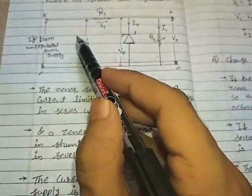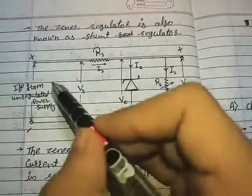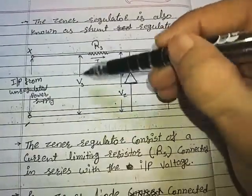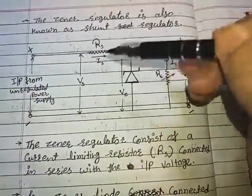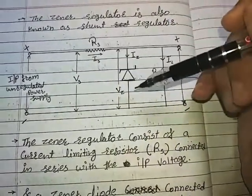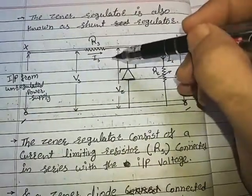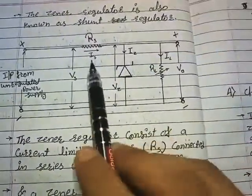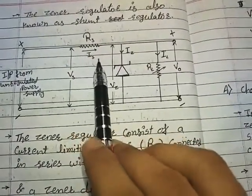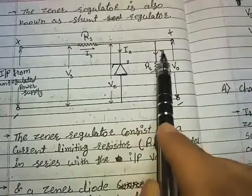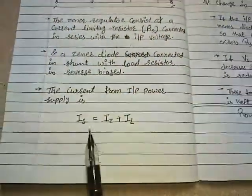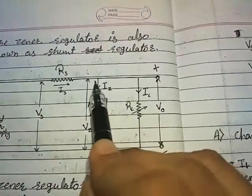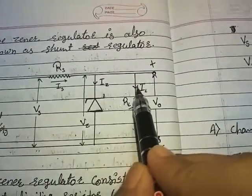The current from the power supply is IS and the voltage across it is VS. By using Kirchhoff's Current Law at the junction, the incoming current equals the outgoing current. Here the incoming current is IS and the outgoing currents are IZ and IL, so we can say IS equals IZ plus IL.